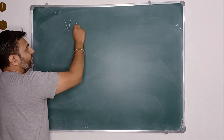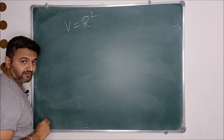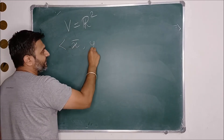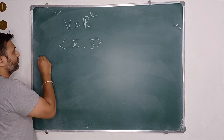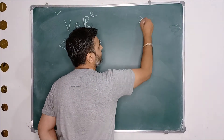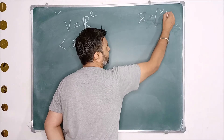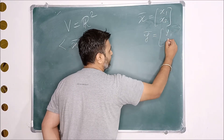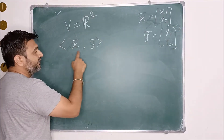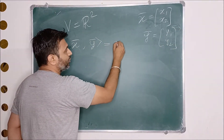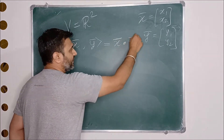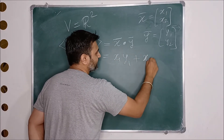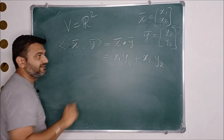So let us start with the vector space R² with the usual addition and scalar multiplication. Let me define an inner product. If I take any two vectors x-bar and y-bar, where x-bar is the vector (x₁, x₂) and y-bar is the vector (y₁, y₂), I am defining the inner product of the two vectors as the dot product: x-bar dot y-bar, which is x₁y₁ plus x₂y₂. You do component-wise multiplication.